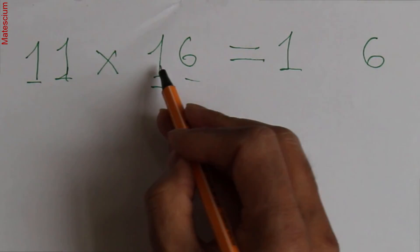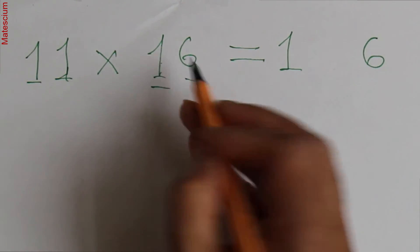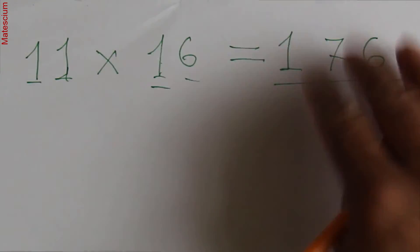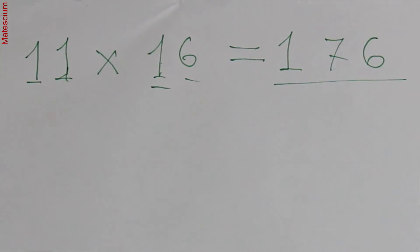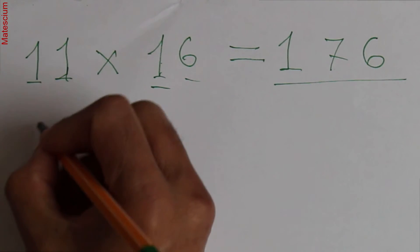Well, write this 1 on one hand side and write this 6 on another hand side. And then add these 2 digits. 1 plus 6 is 7. Yes, 176 is the answer of 11 times 16. This is very simple. Let's practice one more thing.